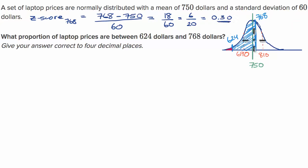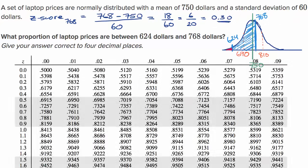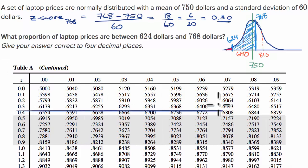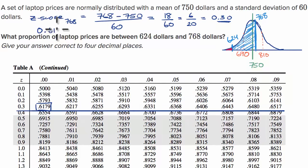That is the z-score for the upper bound. To find the proportion less than that, we take out a z-table. We want z = 0.30, so we go to the row for 0.3 and the column for zero hundredths. The proportion that is less than $768 is 0.6179.